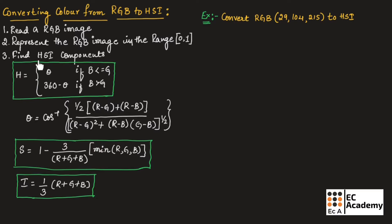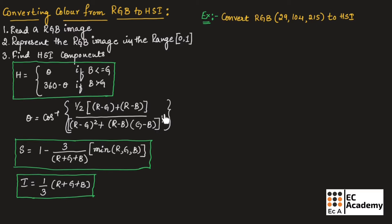Then we need to find the values of HSI components. To find the value of H, we use the formula: H equals theta if B is less than or equal to G, and H equals 360 degrees minus theta if B is greater than G. The value of theta is found using the formula: cos inverse of (1/2 times (R minus G plus R minus B)) divided by ((R minus G) squared plus (R minus B)(G minus B)) to the power of 1/2.